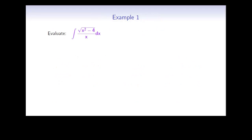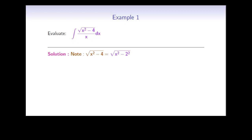Here is our first example. We would like to integrate the square root of x² minus 4 divided by x dx. The square root of x² minus 4 is the square root of x² minus 2², so a equals 2. Therefore, we should use the substitution x equals 2 times secant theta, because we have x squared minus a number in the square root. This means that dx will be 2 times secant theta times tan theta dθ — that's just the derivative of secant theta.